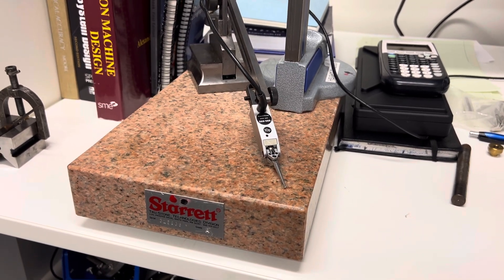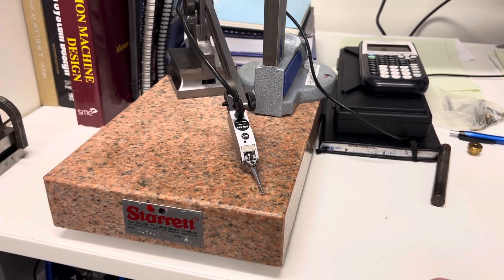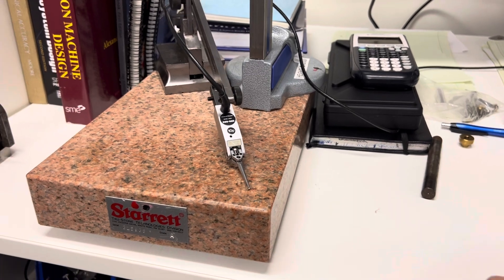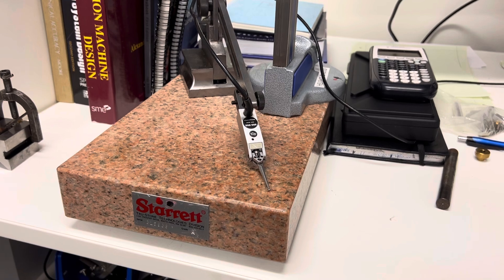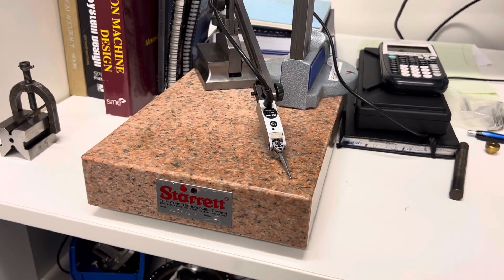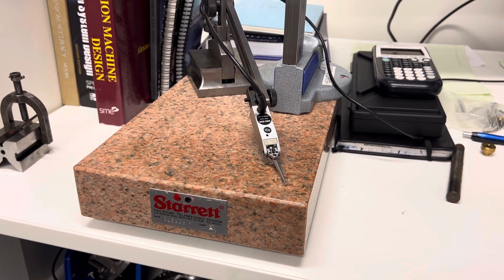I feel like a lot of the time kinematic support and exact constraint design gets taught from the standpoint of precision locating, for which it is extremely useful and important, but it goes beyond just locating, and I've got a neat little demo today showing why it also can be applicable to support and why it's important for support.